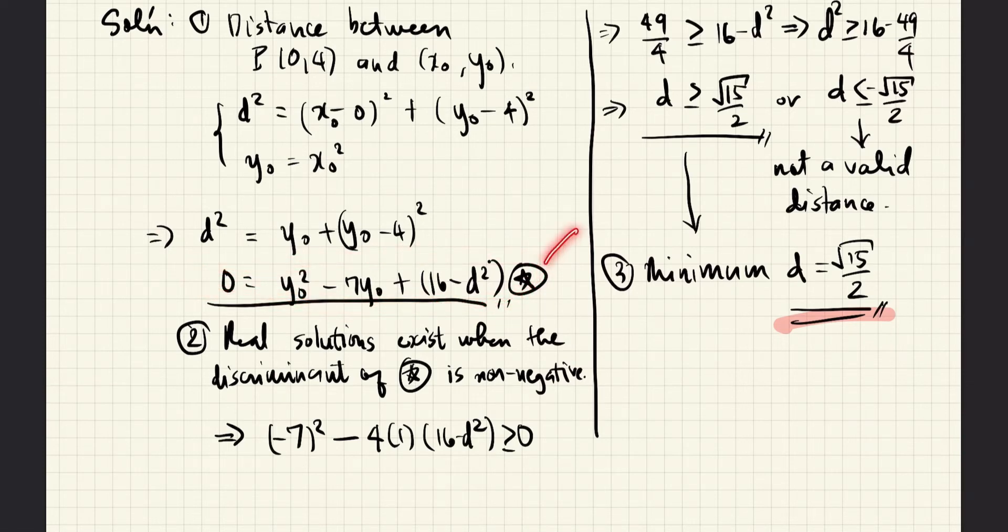The second step is to impose the condition that star must have at least one real solution. That means that the discriminant of star must be greater than or equal to zero. So, we write here the discriminant of star. That is the square of the coefficient of the linear term minus 4 times the coefficient of the quadratic term times the constant term.